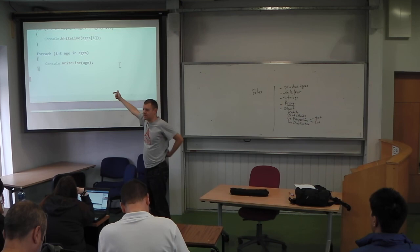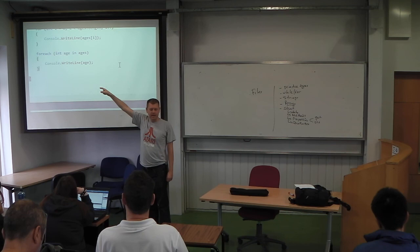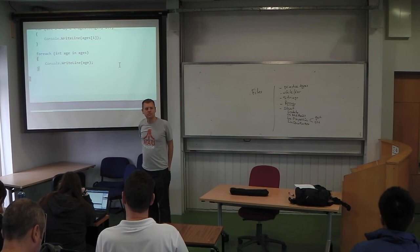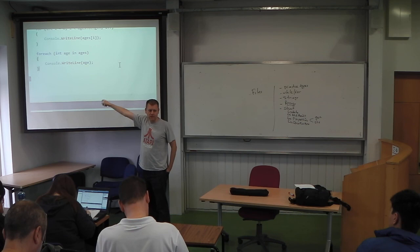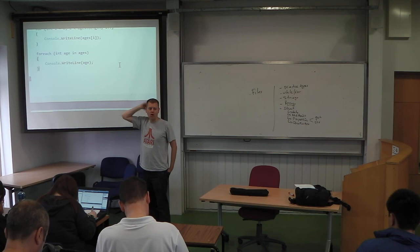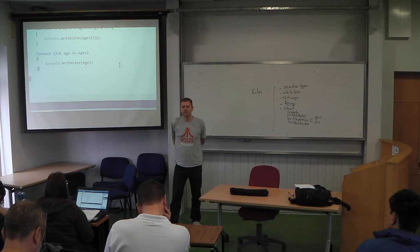What happens in a foreach loop is that for every element in `ages`, one by one, they get copied into the variable `age`. Each time around the loop, `age` represents a different element of the array. First time it's the zeroth element, then the first element, then the second, then the third. So if you need to iterate over a collection you can use a foreach loop.